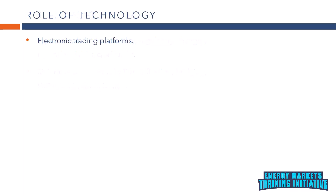Role of technology: advancements in technology, including electronic trading platforms, algorithmic trading, and data analytics, have revolutionized energy trading by increasing market transparency, improving price discovery, and facilitating faster trade execution. Automated trading algorithms can execute trades based on predefined parameters, such as price thresholds or market indicators, without human intervention, enabling traders to capitalize on market opportunities more efficiently.